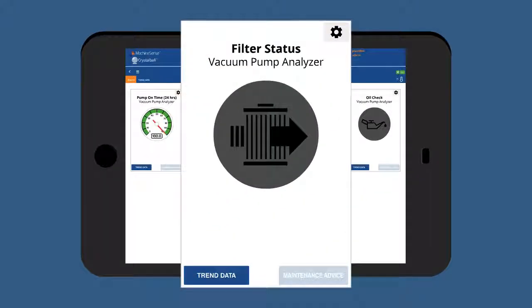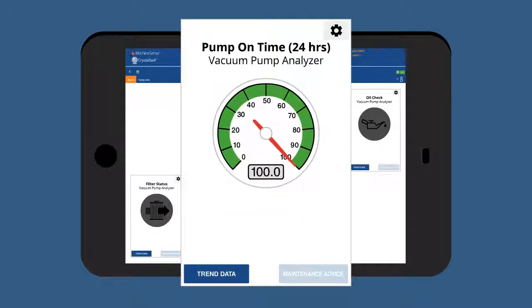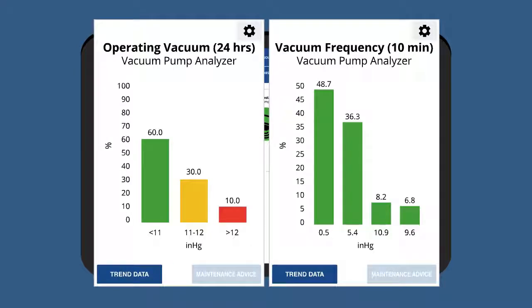These sensors monitor filter status, oil status, pump utilization, and vacuum trends. Operating vacuum and frequency dashboards provide a complete understanding of pump conveying performance.